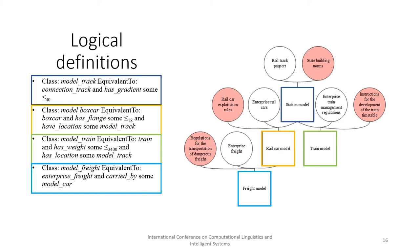In the ontology of the train model, modules of the enterprise trains and user regulations are imported and linked together. The ontology of enterprise freight models and restrictions from regulations for the transportation of dangerous freight are also linked together.